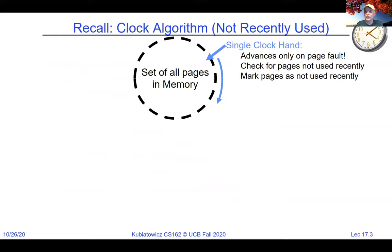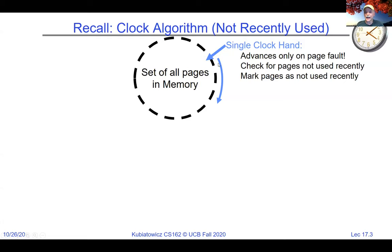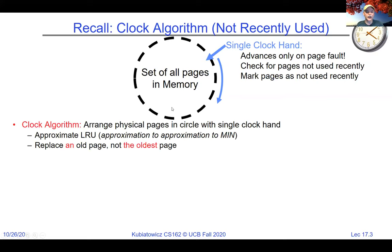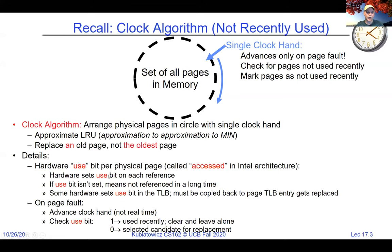We went through several policies last time. LRU was a pretty good policy, but impossible to implement. So we came up with the clock algorithm. The reason it's called the clock algorithm is because it looks like a clock. We basically take every DRAM page in the system and link them together. In an OS like Linux, every physical page or range of physical pages has a descriptor, and those descriptors are linked together. We have a clock hand which says which page we're currently looking at. On every page fault, the clock algorithm looks at the hardware use bit, which is usually in the page table entry.